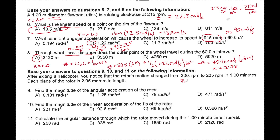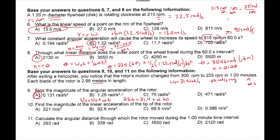I already converted this to 31.4 rads per second as omega initial, and the change in speed gives 23 rads per second as omega final. Time must be converted to 60 seconds. To find the angular acceleration of the rotor, I use omega final equals omega initial plus alpha t: 23.6 equals 31.4 plus alpha times 60. Alpha comes to 0.13, but this is negative since we're slowing down.